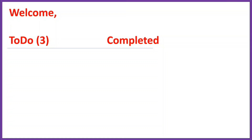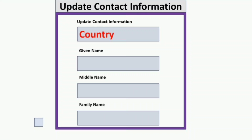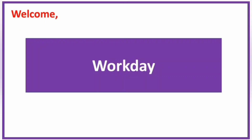Next, click on 'Update Contact Details'. You will be taken to a page asking you to mention your country and nationality, then your full name — the first name without surname — then your middle name, and finally your surname. Click the agreement checkbox and submit. With this, you have completed the creation of your Workday profile.